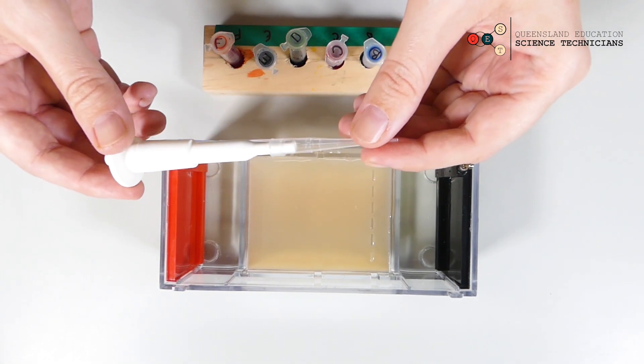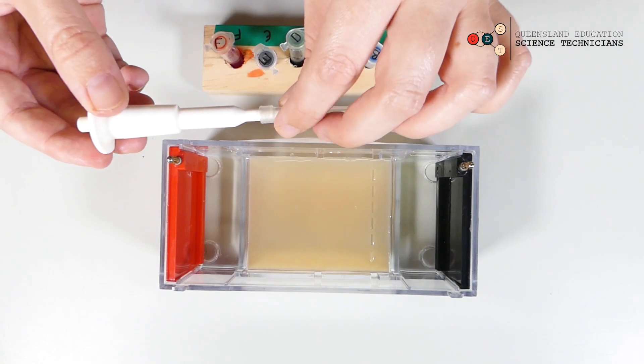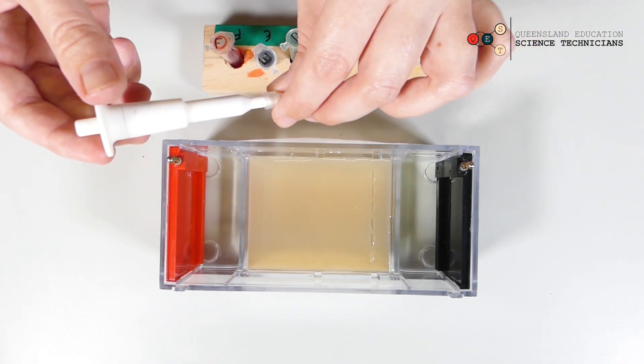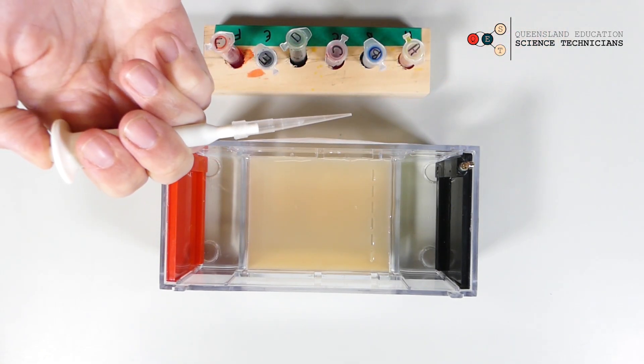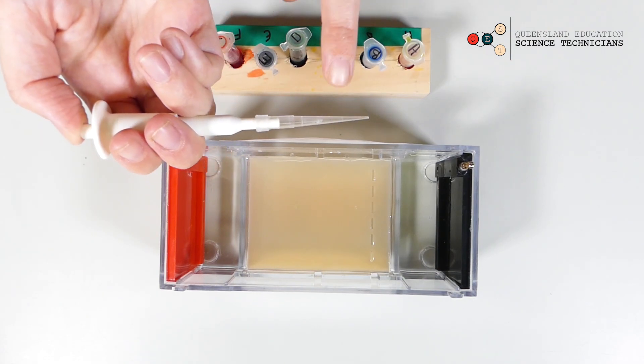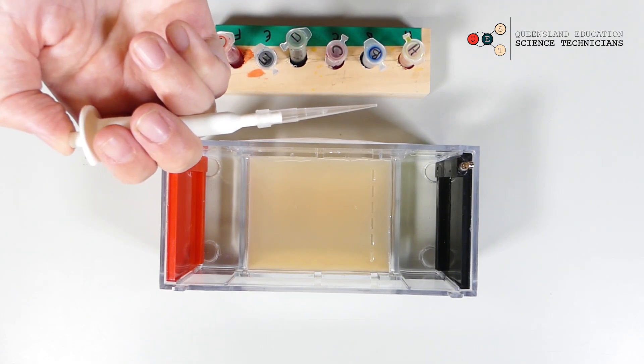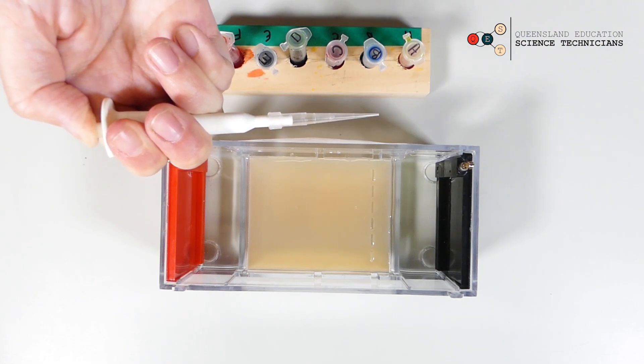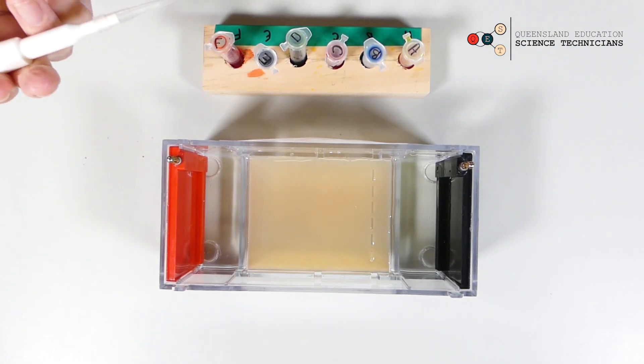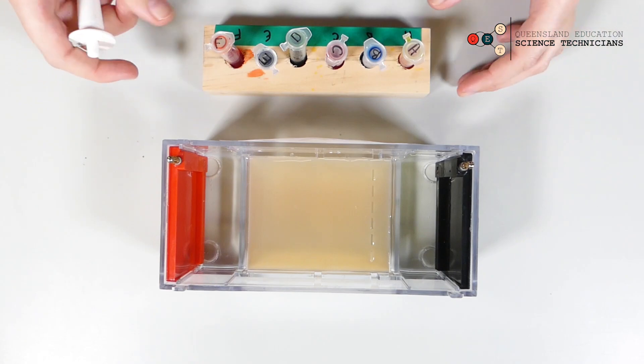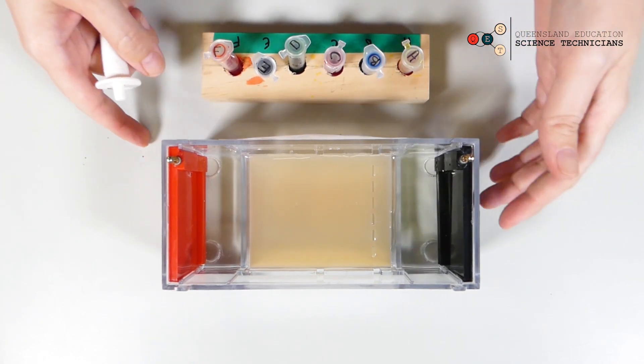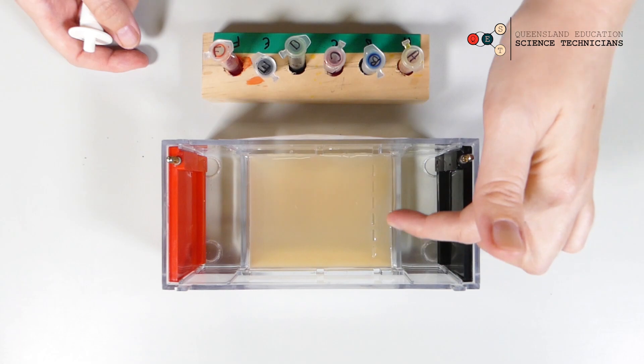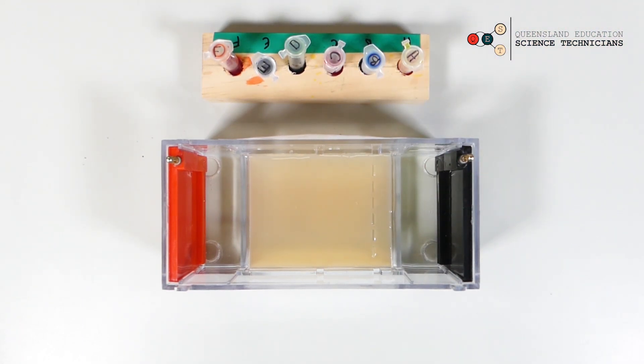We have these little micropipettes. They are pretty simple, they don't do anything fancy. Just click the button in and out to pull up your sample into the pipette tip, and then just push it out in once to push your sample out. So we're going to load up our food dye mixtures into the wells in our gel, and just keep a note of which dye you're putting into each well.